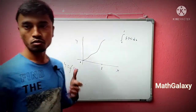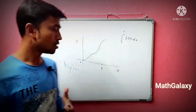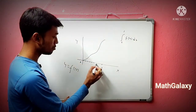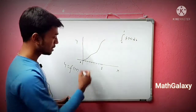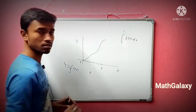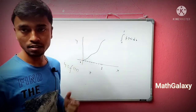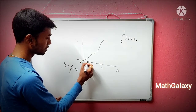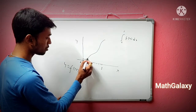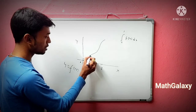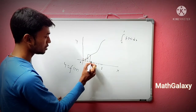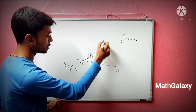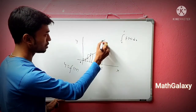In Riemann integration, we take some partition — called partition P — from the interval. We then consider some rectangles. This is the function, and we take rectangles at various points along it. At each point, the rectangle looks like this, and so on. We keep forming these rectangles across the interval.